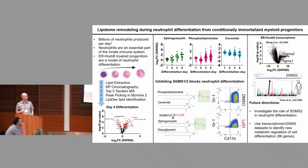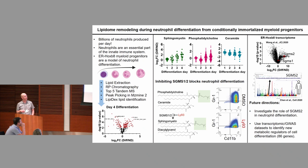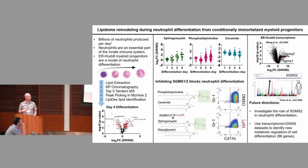Enrichment analysis shows that the most enriched and increased lipid species is sphingomyelin. As you just heard about ceramides, sphingomyelin is a product of ceramide and the choline group from phosphatidylcholine — this choline is transferred to ceramide by enzymes SGMS1 and SGMS2 to generate sphingomyelin and diacylglycerol as a side product. There are small molecule inhibitors to inhibit this process; one is Line-93. When I inhibit sphingomyelin synthase 1 and 2 with Line-93 and measure cell differentiation with external markers GR1 and CD11b, I find decreased cell differentiation — indicating immature neutrophils.